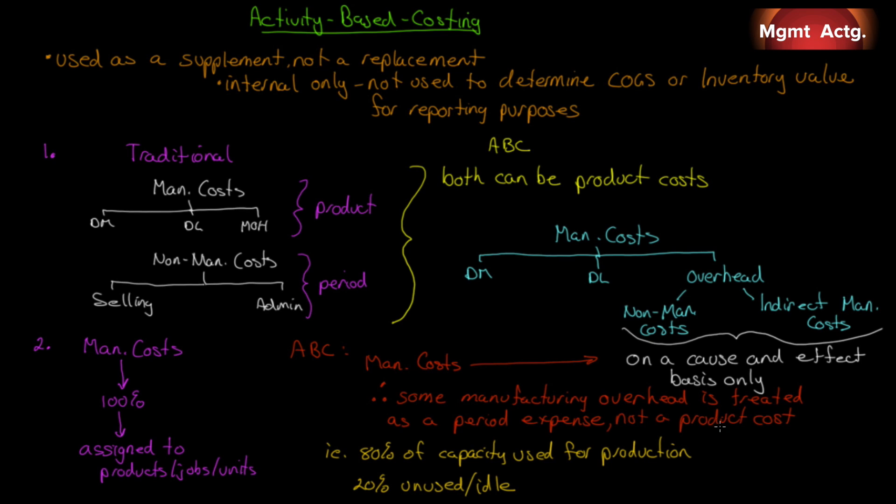20% is unused or idle. Well, that's unused capacity. That would not be included in any product because there's no activity associated with it. That would then be classified as a period cost under ABC accounting. Just to make better decisions. Certainly not to report that number.